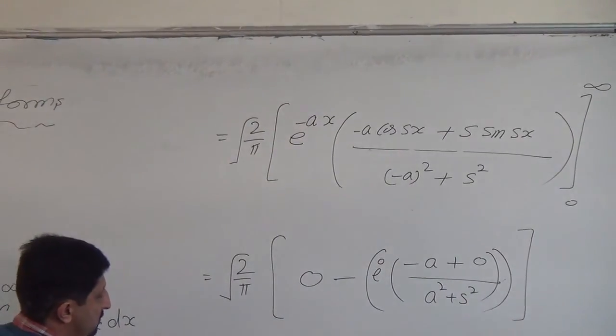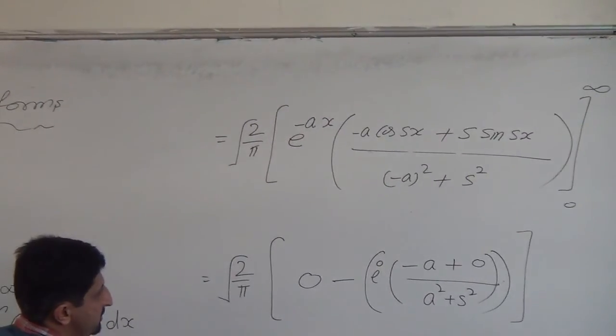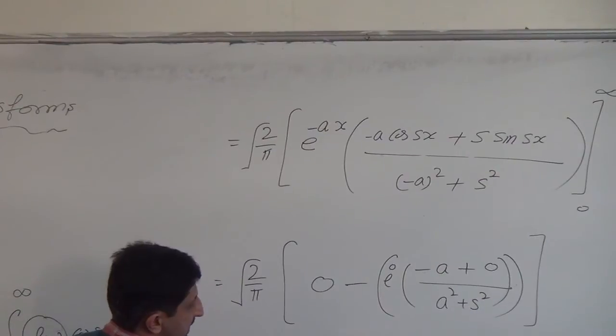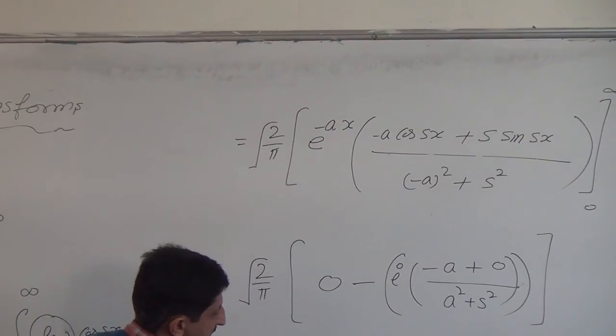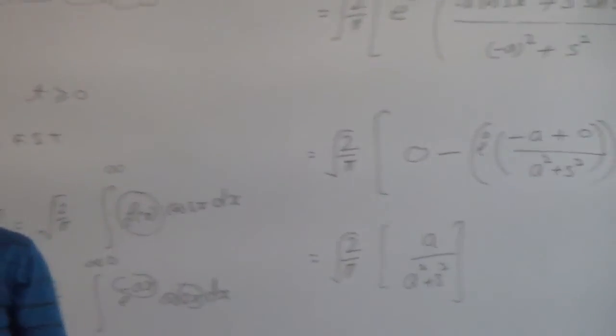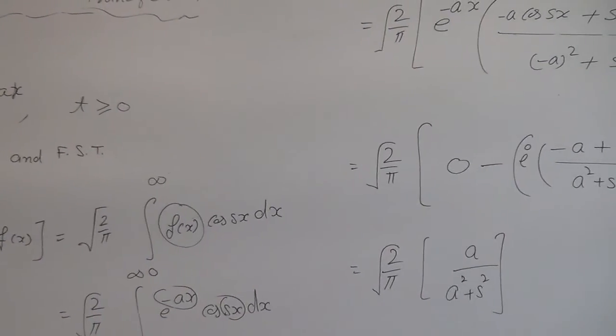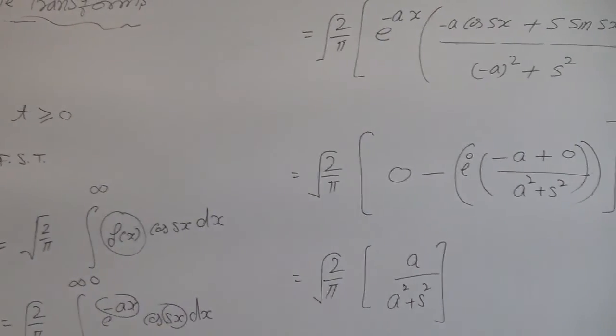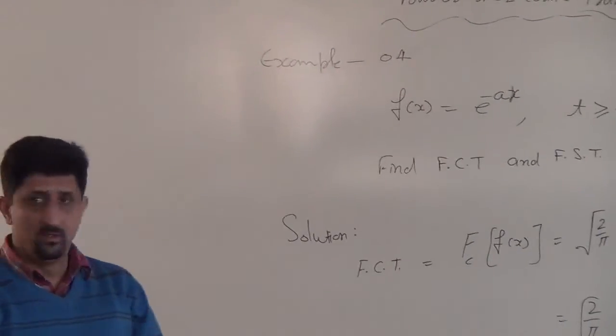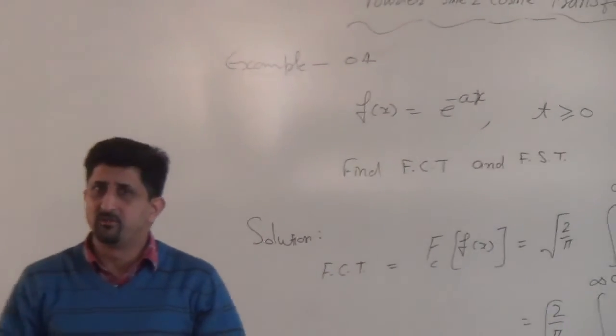And we will be doing 2 upon pi under root, minus e to minus plus, a divided by a squared plus s squared. This is what we have: a squared plus s squared, a divided by a squared plus s squared.